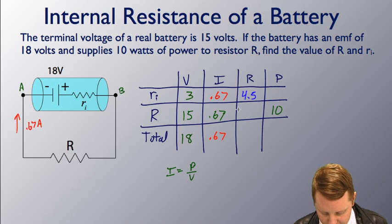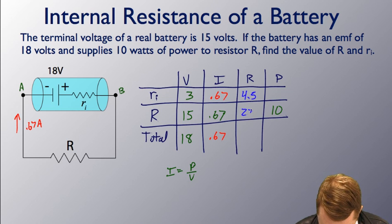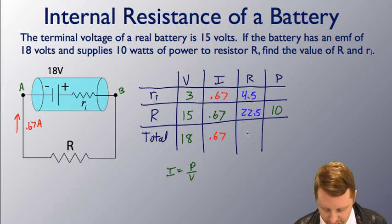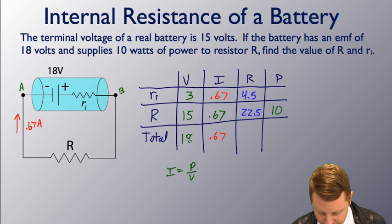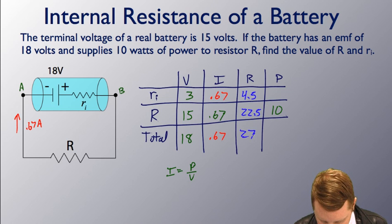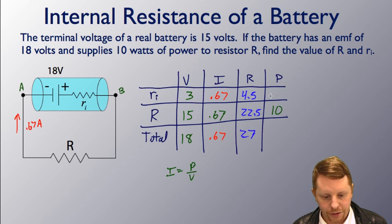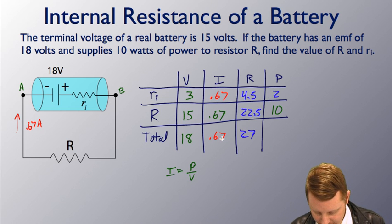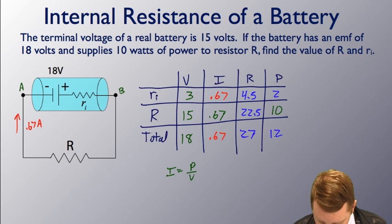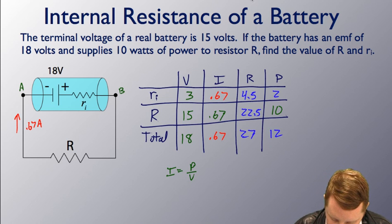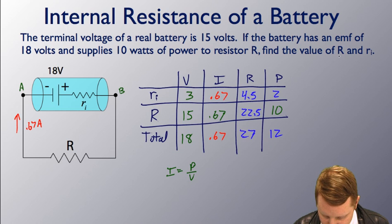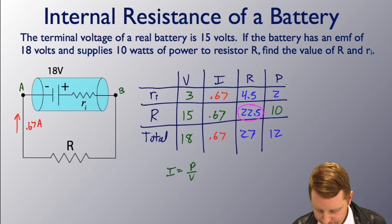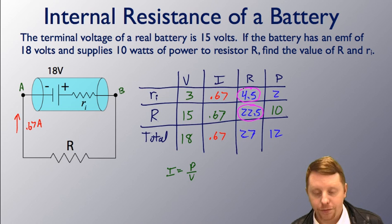Capital R, V over I, 15 over 0.67, is going to give us a resistance of about 22.5 ohms. And my total resistance is going to be V over I, or I could add up my individual resistors because they're in series here, to come up with 27 ohms. I can also fill in my powers here if I want to. Power equals V times I, which is going to be 2 watts here, and 18 times 0.67, that's going to be 12 watts here. To answer the initial questions, find the value of R, while the value of R is 22.5 ohms, and RI, 4.5 ohms.